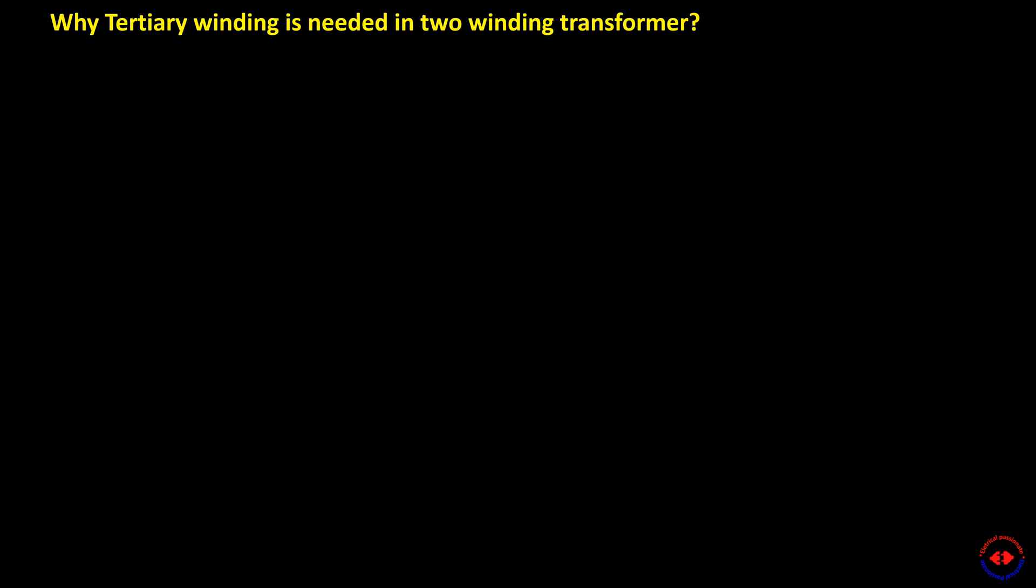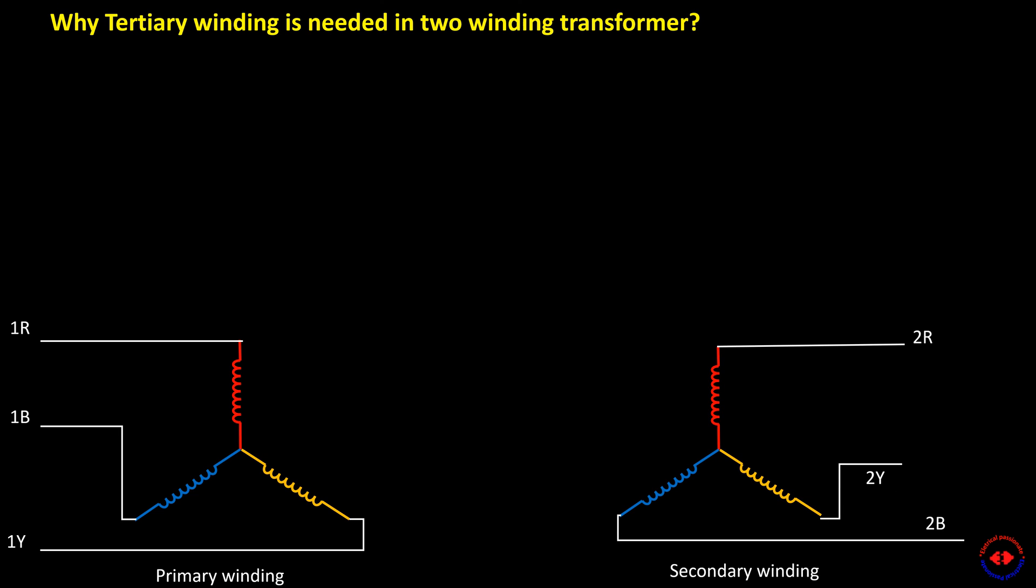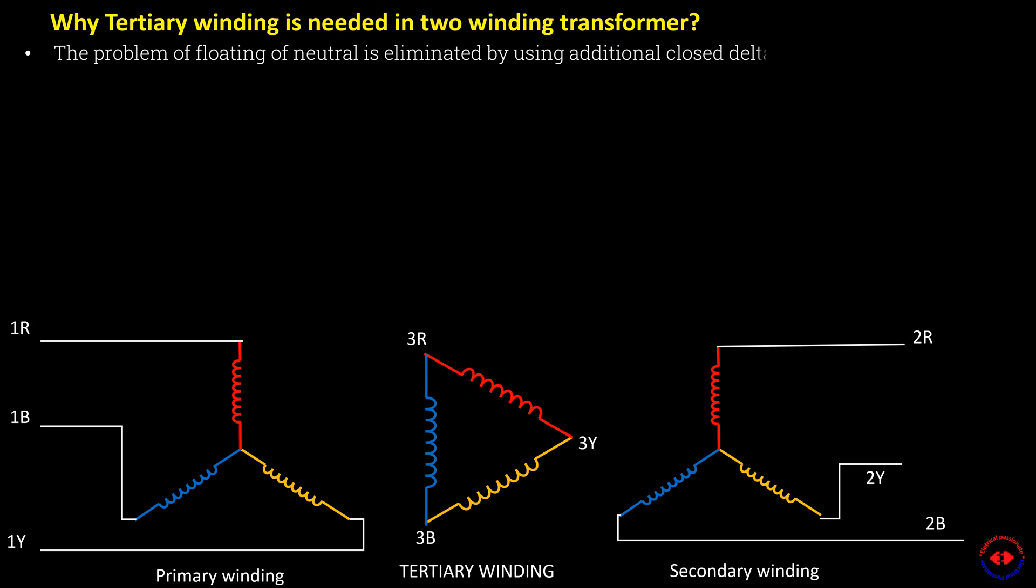Why tertiary winding is needed in two winding transformers? The problem of floating of neutral is eliminated by using additional closed delta tertiary winding.